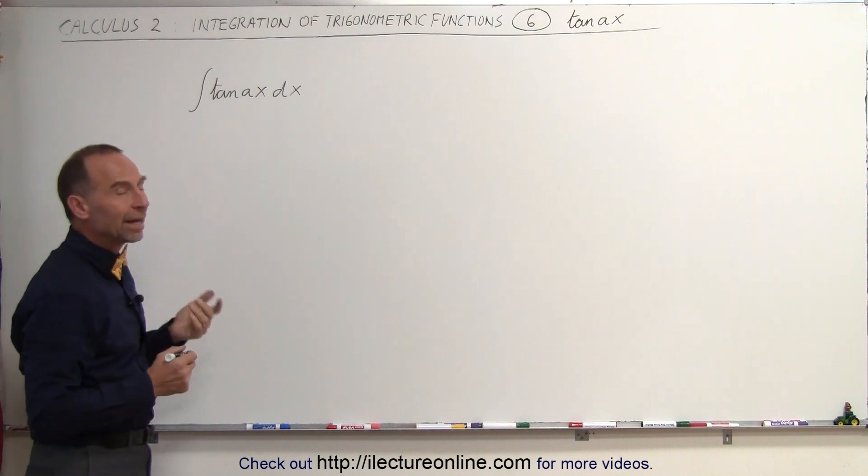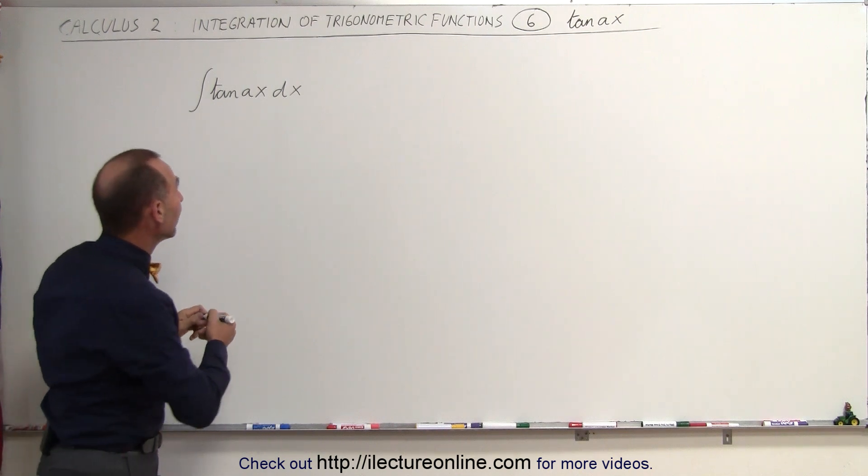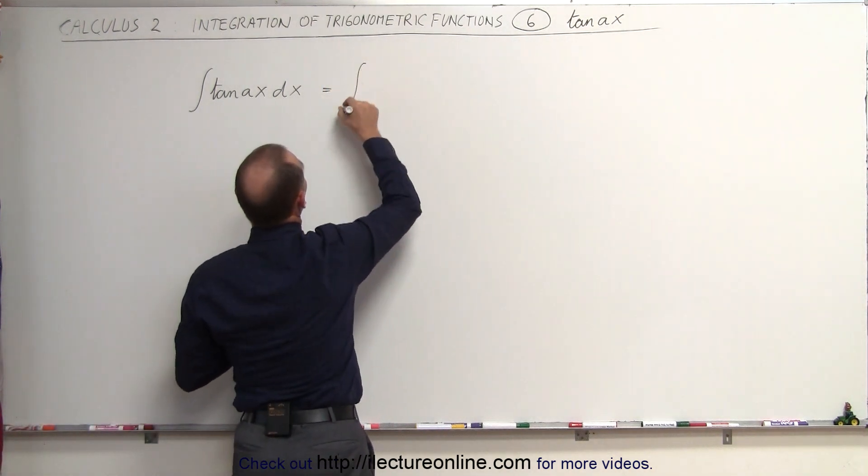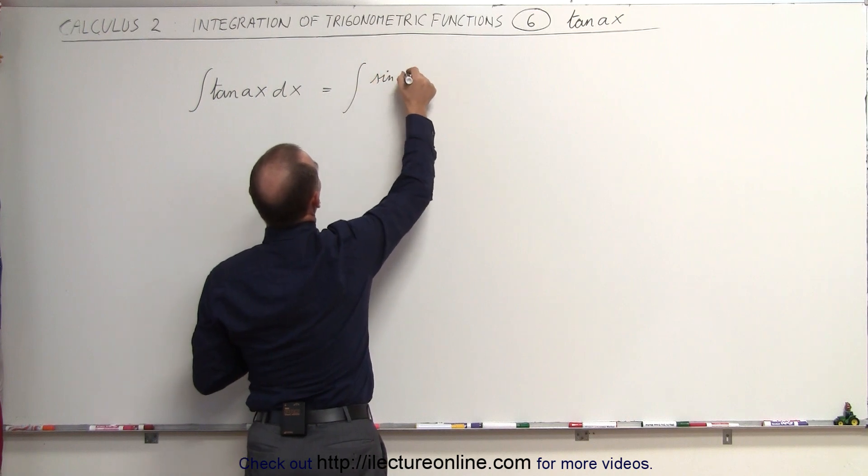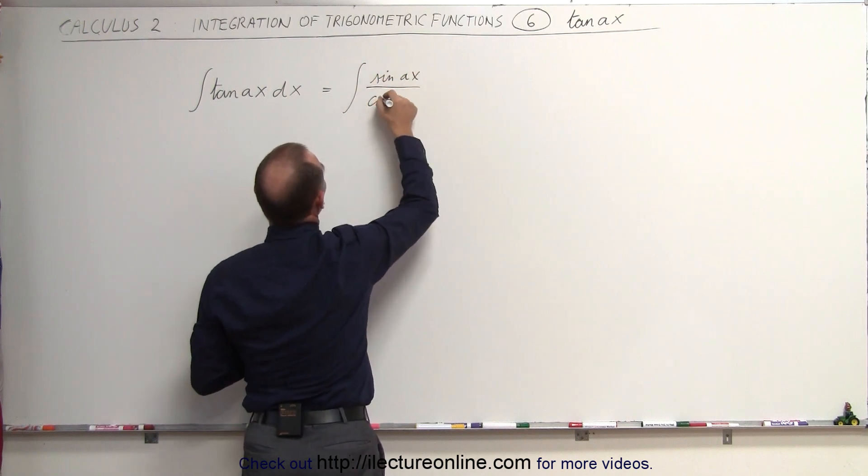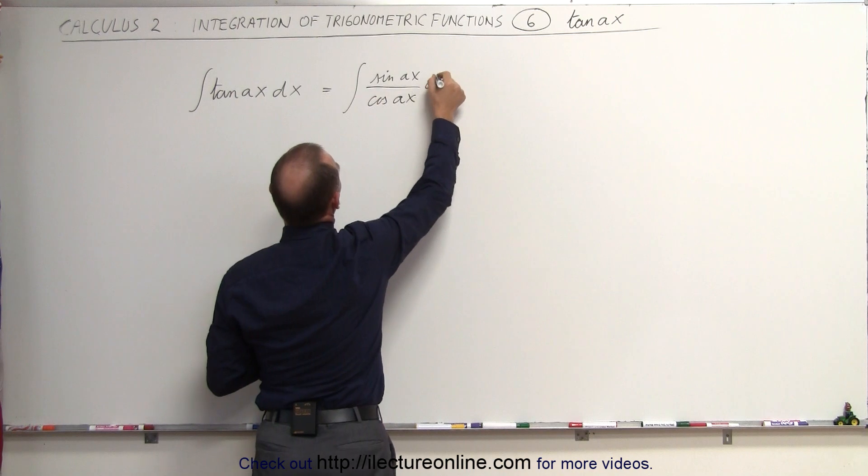Take the integral of the tangent of Ax. What we need to do is rewrite it as the integral of the sine of Ax divided by the cosine of Ax times dx.